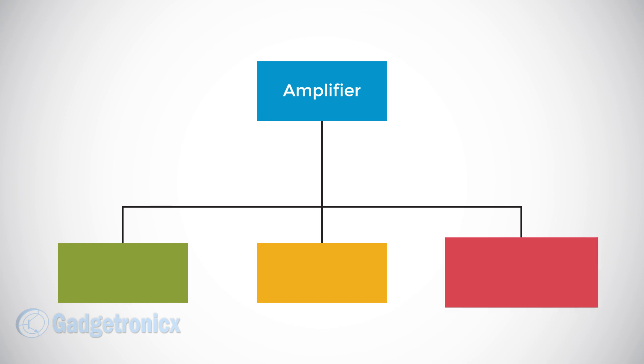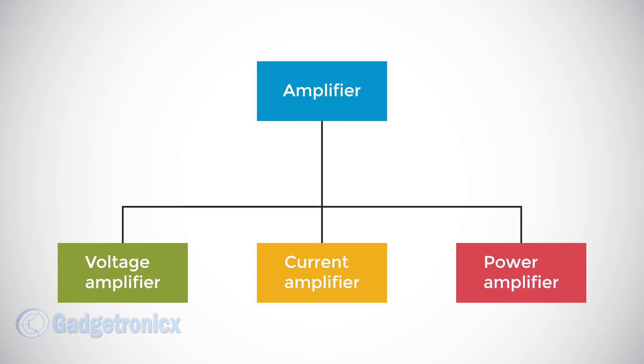Amplifiers are broadly categorized into three types based on their function. These are voltage amplifier, current amplifier, and power amplifier.